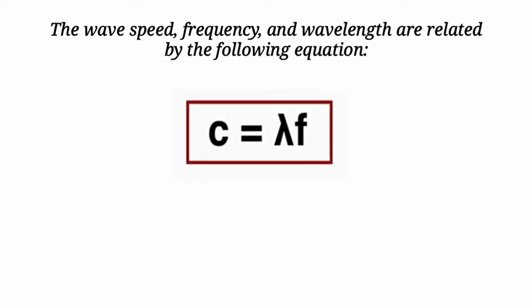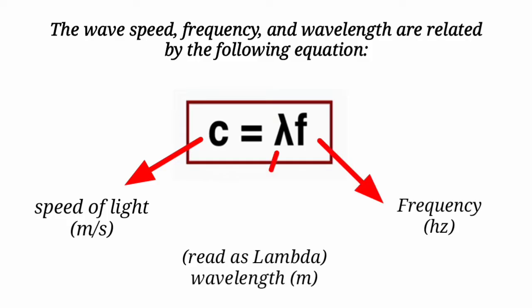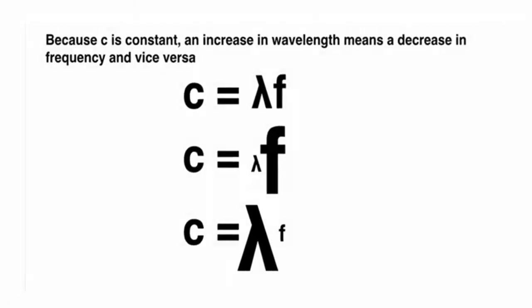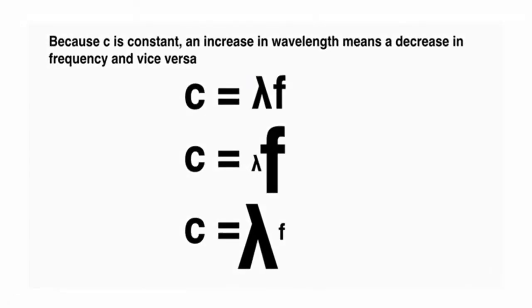The wave speed, frequency, and wavelength are related by the following equation: c equals the product of wavelength and frequency, where c is the speed of light expressed in meters per second, the frequency f is expressed in hertz, and the wavelength λ is expressed in meters. Because c is constant, an increase in wavelength means a decrease in frequency and vice versa.